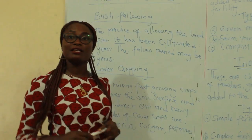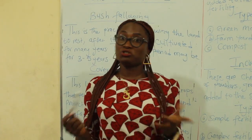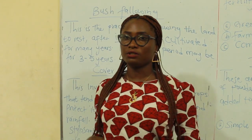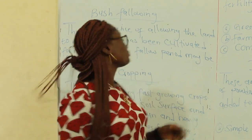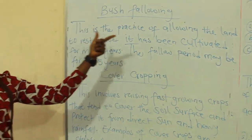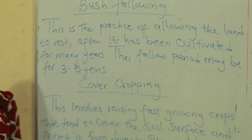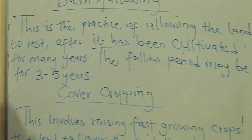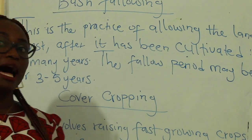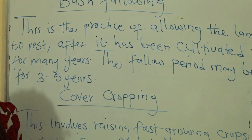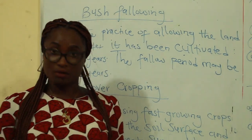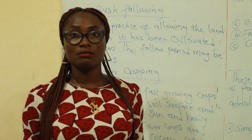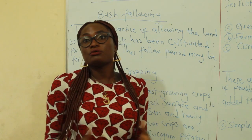Another word for bush fallowing is shifting cultivation. Should you see 'shifting cultivation' in your exam, know that they are talking about bush fallowing. Bush fallowing is the practice of allowing the land to rest after it has been cultivated for many years. The fallow period — the word 'fallow' can also mean 'rest' — so fallow period and rest period are the same thing. The fallow period could be three to five years.